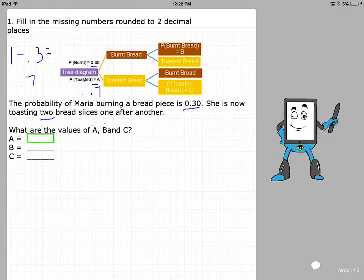If we add up the probability for all possible events, they equal 1. So that means we already found A. The probability for toasted bread is 0.7.